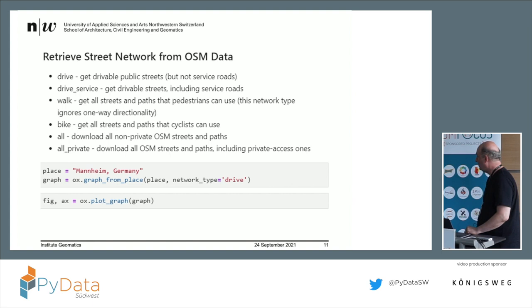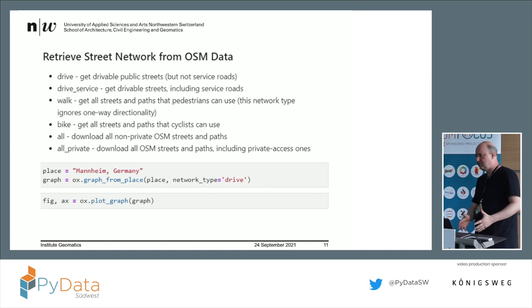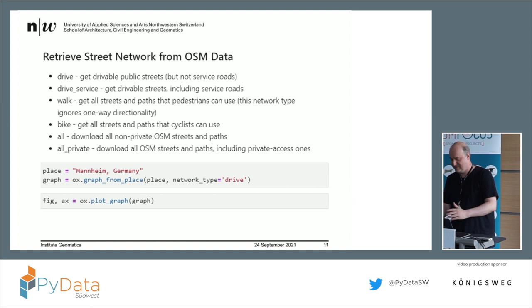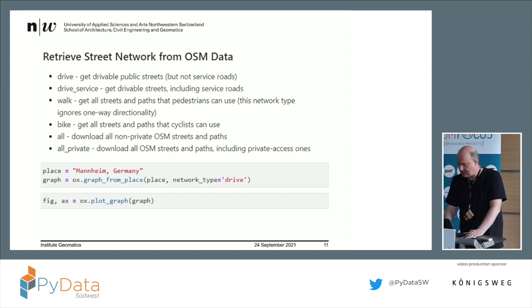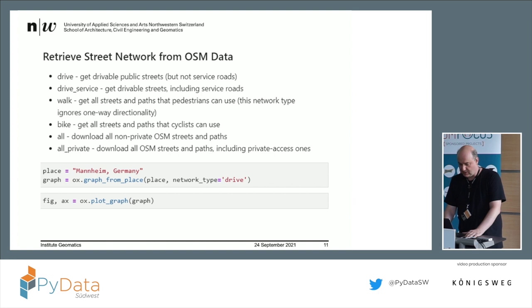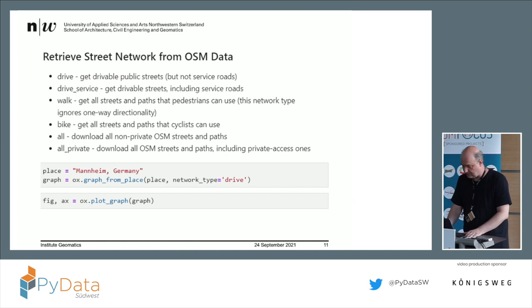So what can we do? We can specify a place — for example, Mannheim, Germany. I'm sure there are other Mannheims on the planet, so you have to specify the country. Then you call OX graph from place and specify the network type. There are some network types: for example, drive or bike path. I just did the drive network. I came here by taxi and wanted to see if the taxi driver took the fastest route — which he didn't, but we can talk about that later.